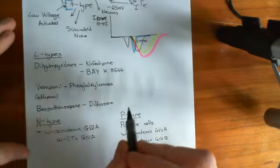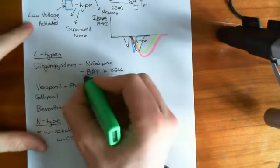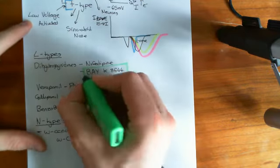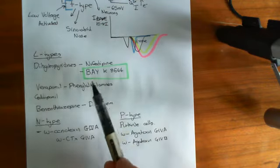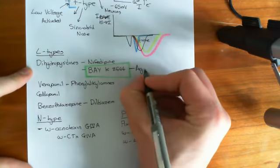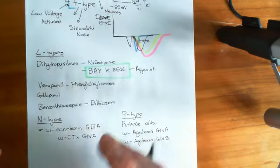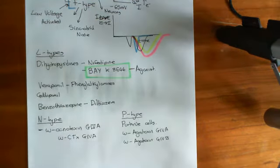I want to add that I made a mistake in the previous video: I said that BayK8644 was an antagonist for L-type calcium channels. It's actually an agonist — it increases the conductance of calcium through these channels. It is still a pharmacological agent specific to L-type calcium channels, allowing us to discern that this is a different type of channel, because the drug is ineffective against the others.